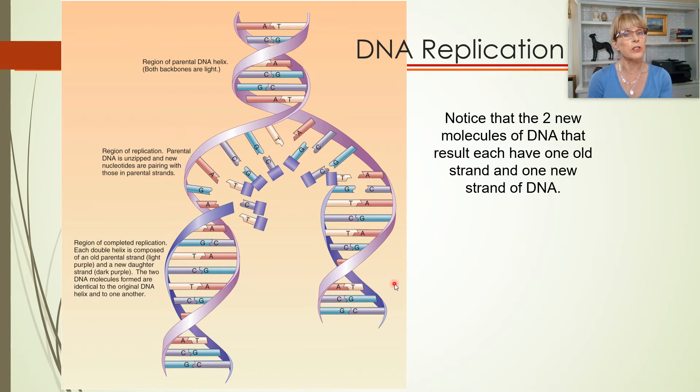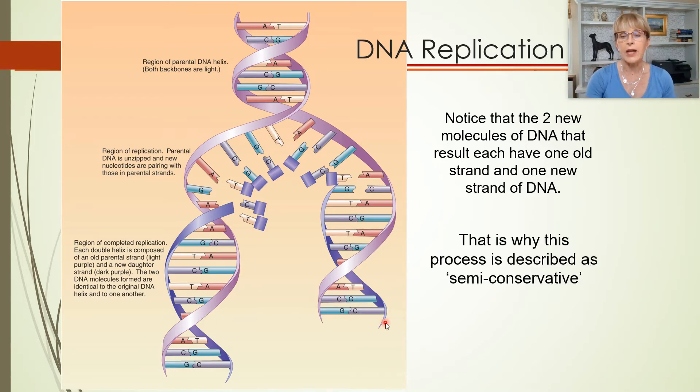So one of these DNA molecules will go to one daughter cell and one will go to the other daughter cell. I would like you to notice that neither daughter cell gets mom's original strand of DNA. Each daughter cell gets one of mom's original strands, the left one here, the right one here, and one new strand. And that is why the process is described as semi-conservative.